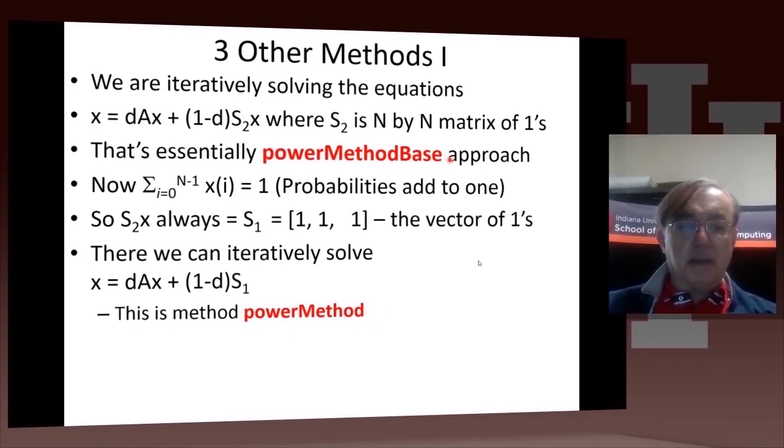So actually, you can slightly change the method, because if you do some arithmetic, you will find that... s2 times x is just actually summing up the components of x. They actually don't matter what x is, they're always the same, because the components of x always add up to 1. So you can actually replace this by a slightly different form. x equals d times a times x, plus 1 minus d times a fixed vector s1, where s1 is always ones. So that just gives you a refinement of the method, which is what's called par method.